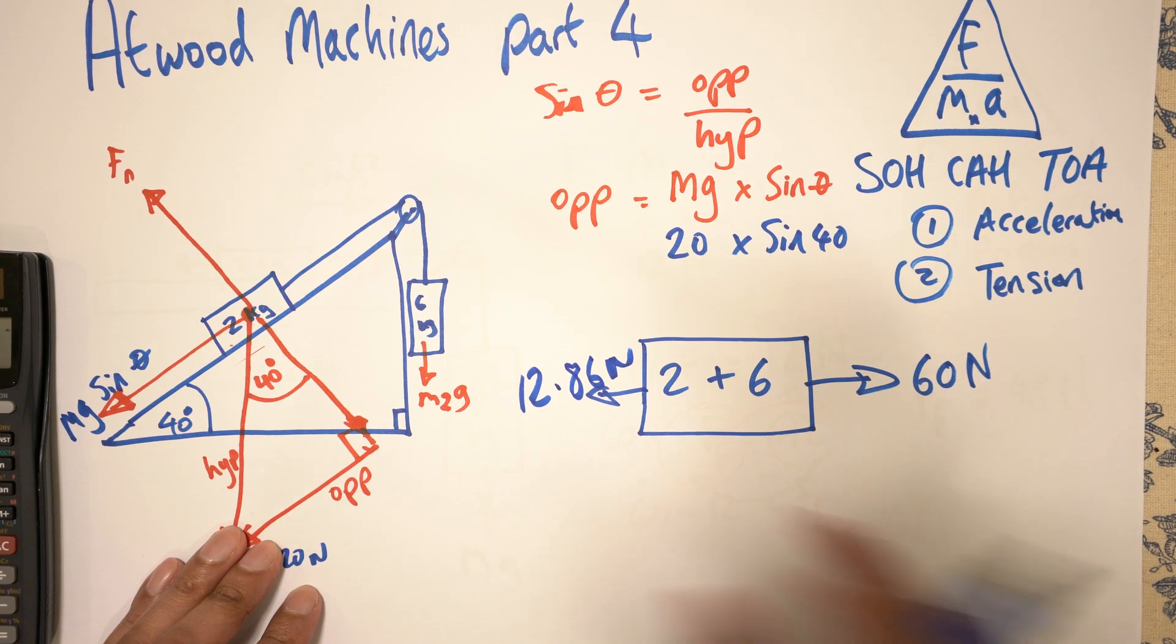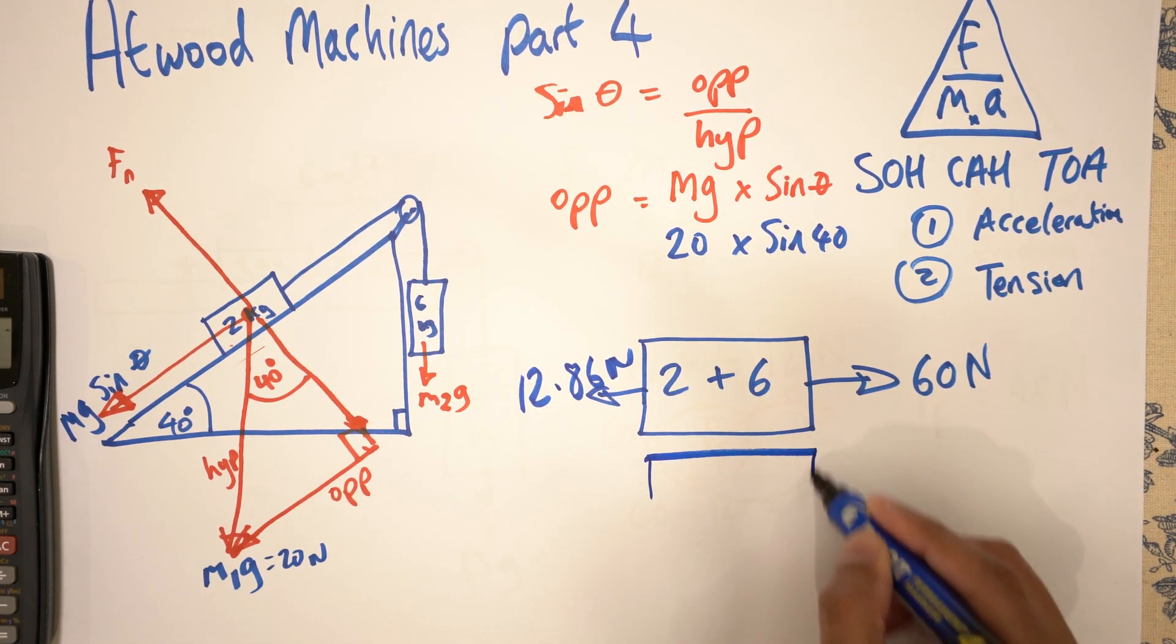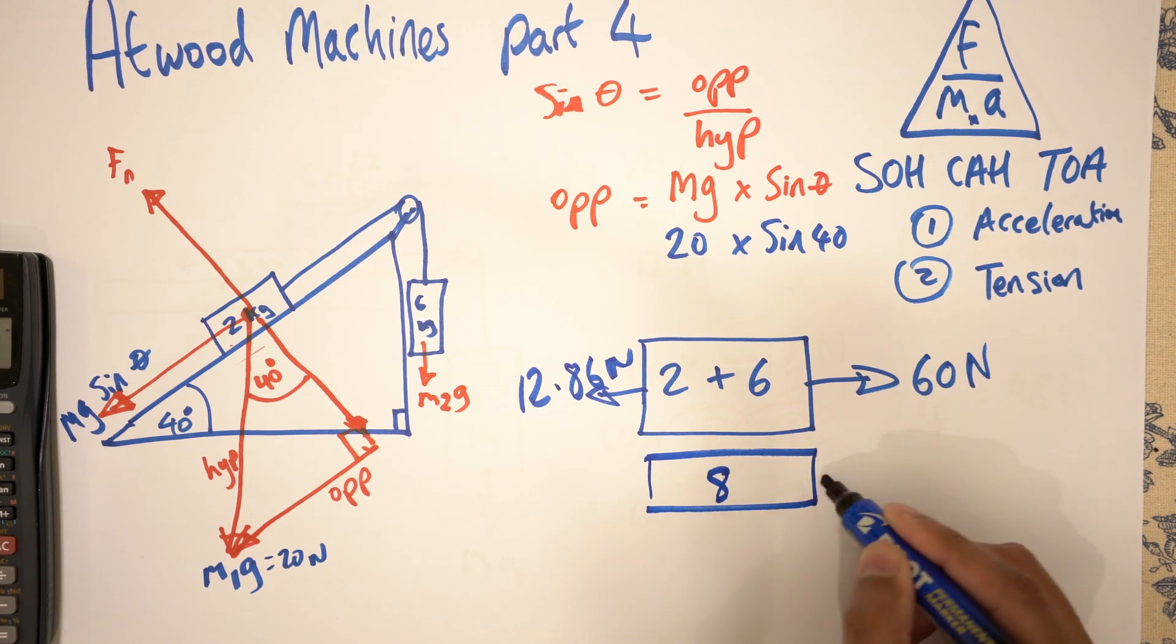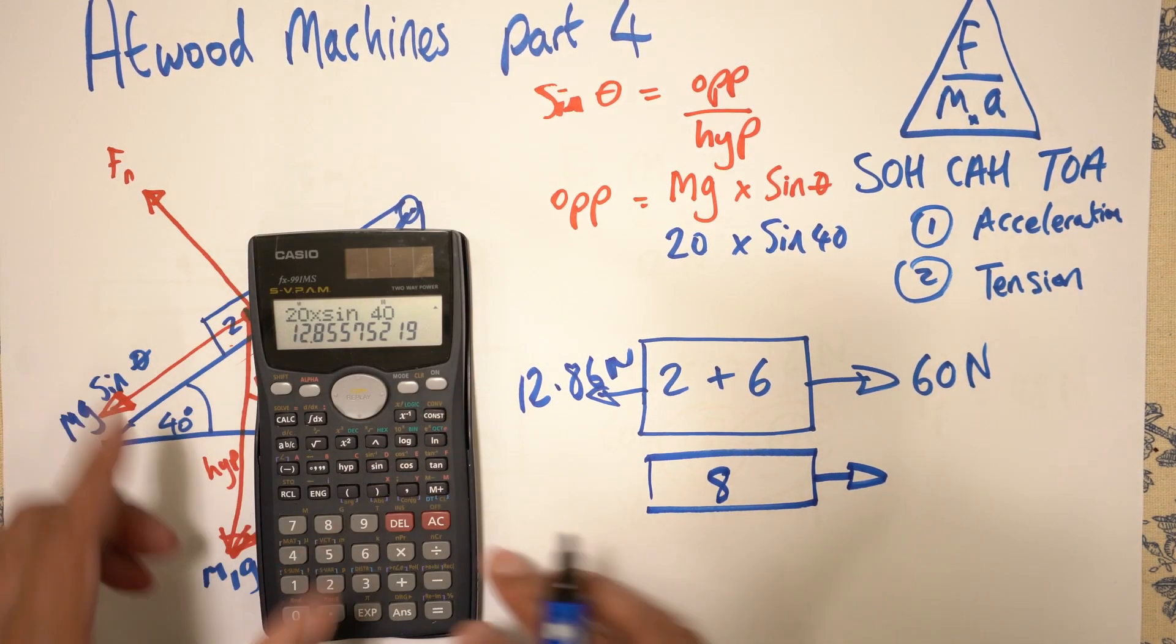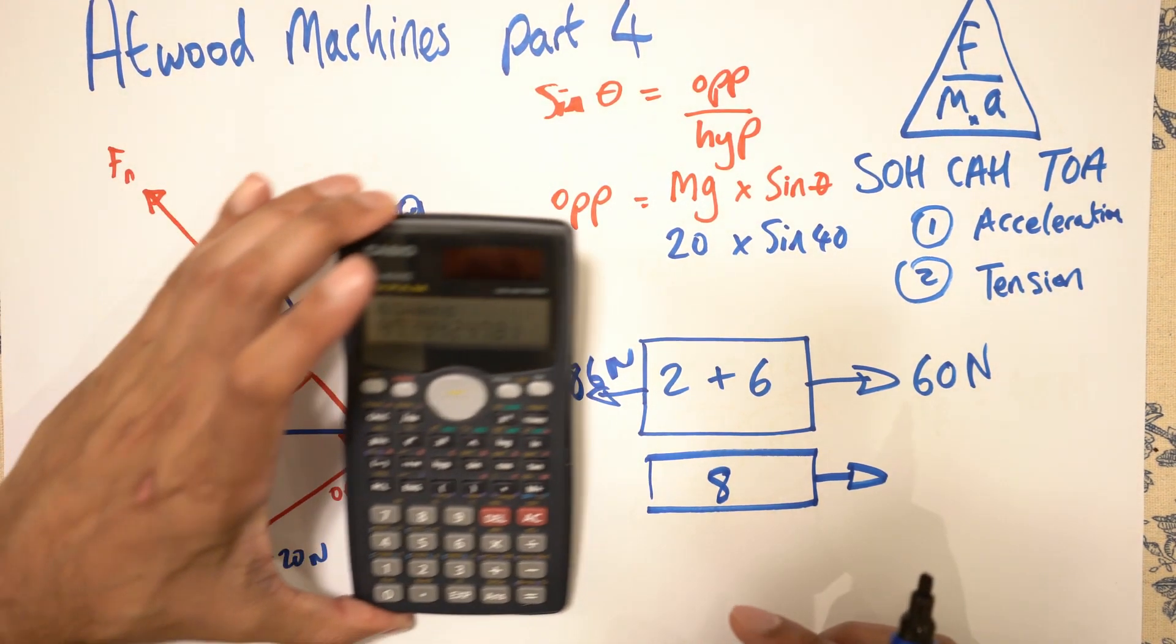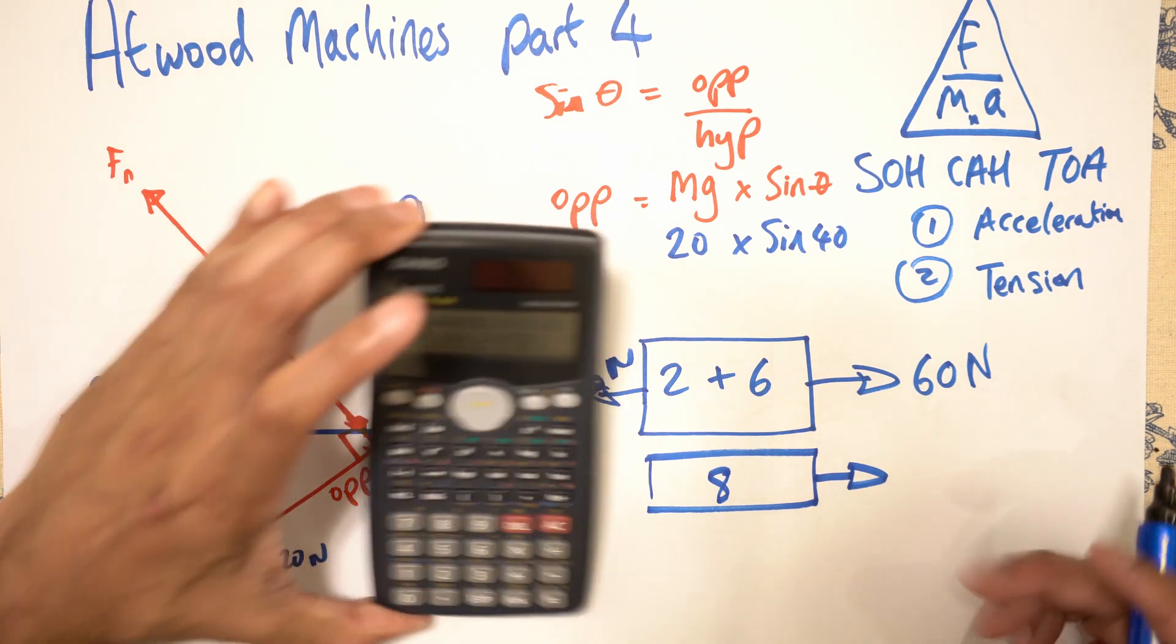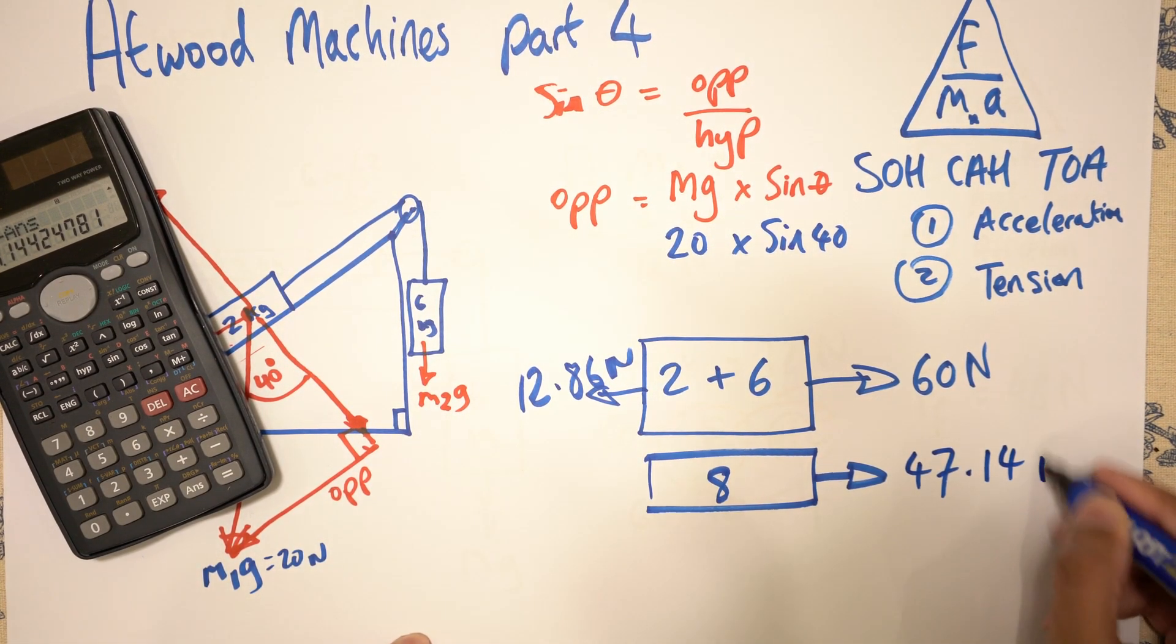Now, in order to get the net force, big minus small, so it's the equivalent of 8 kg with 60 minus 12.86. So 60 minus that, which is 47.14 Newtons.